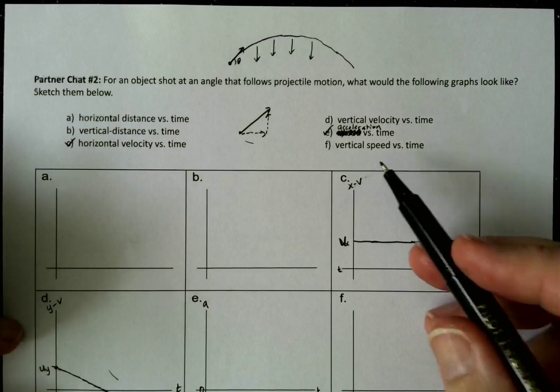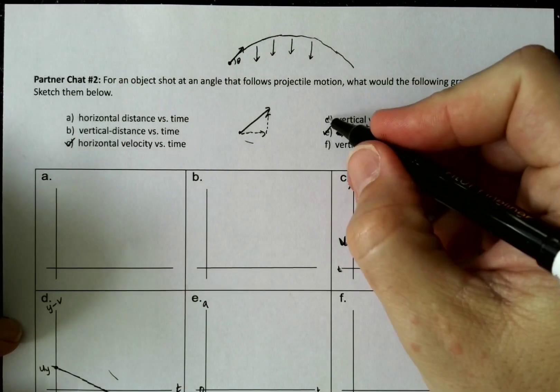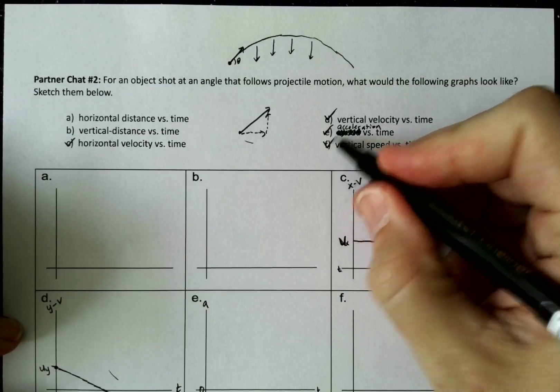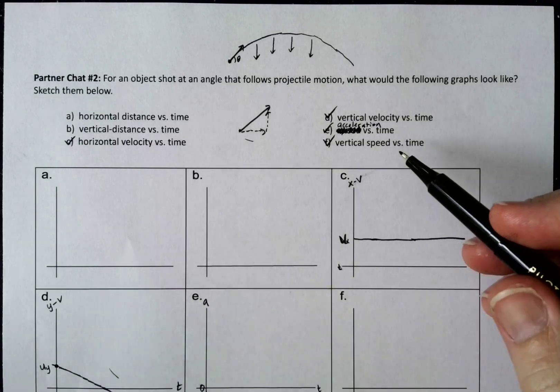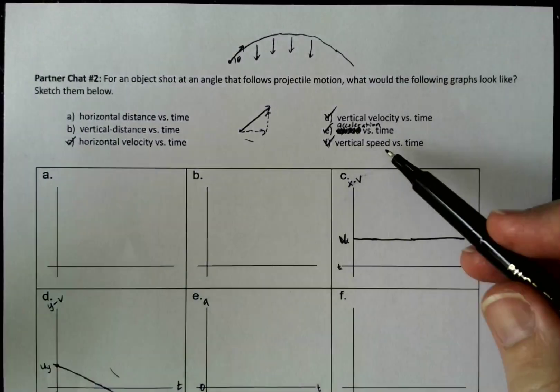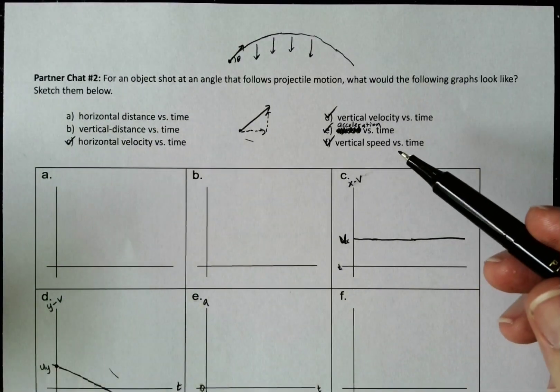Alright. Let's look at the vertical speed. While we're working on vertical velocity, let's talk about vertical speed. So the only difference between velocity and speed is that speed doesn't need direction.